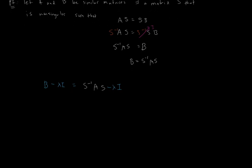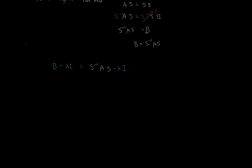From here, we are going to rewrite I as S inverse times S, because I is the same as S inverse times S. So the expression becomes S inverse AS minus lambda times S inverse S. Now I factor out S inverse on the left, which leaves AS minus lambda S. Then I factor out S on the right, giving S inverse times the quantity A minus lambda I, times S.